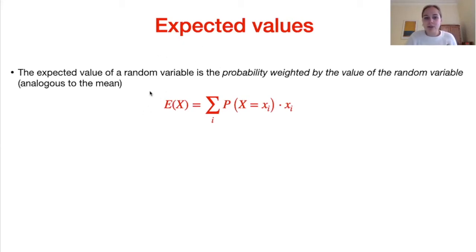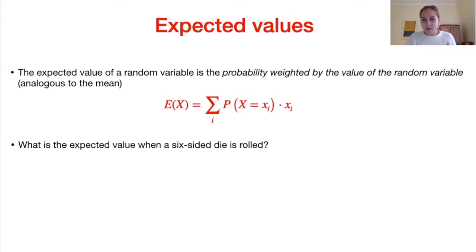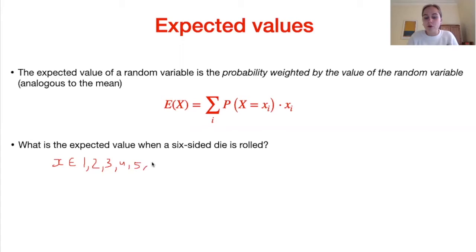Let's look at an example: what is the expected value when we roll a six-sided die? The possible values of our random variable are 1, 2, 3, 4, 5, and 6. Because they are equally likely outcomes, the probability that the random variable equals any of these values is 1 over 6. Plugging into the expected value equation, we get the sum of (probability × value) for each outcome.